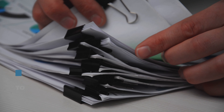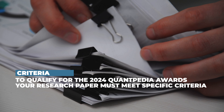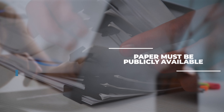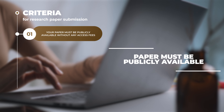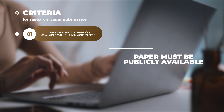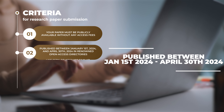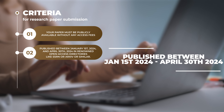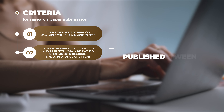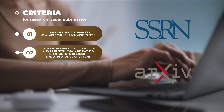To qualify for the 2024 Quantpedia Awards, your research paper must meet specific criteria. First, your paper must be publicly available without any access fees. It should be published between January 1st, 2024 and April 30th, 2024 in renowned open access directories like SSRN or arXiv, or similar.